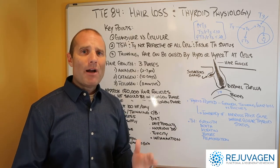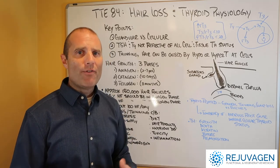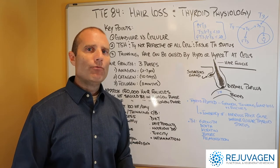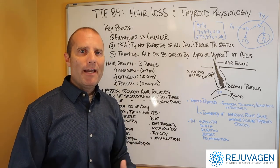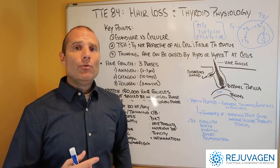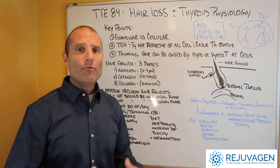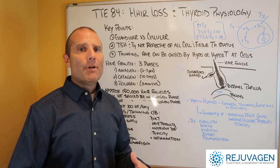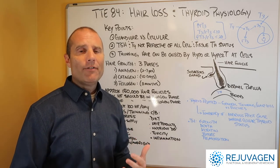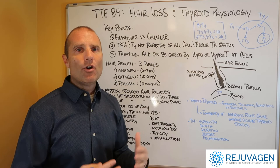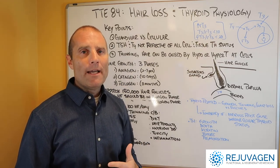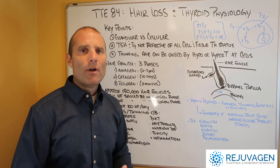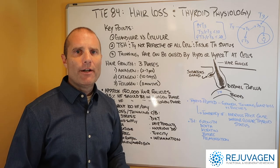Unfortunately, in the allopathic model there's probably not going to be much time spent trying to figure that process out. That's where functional medicine shines in trying to get to that root cause. So if you have thinning hair or hair loss and you think you have a thyroid condition — or you've been diagnosed and TSH and T4 are normalized but hair is still thinning — you have to ask whether there's a cellular hypothyroid condition going on. If not, then we need to look for other mechanisms that may be causing your hair loss.